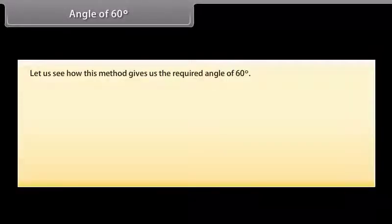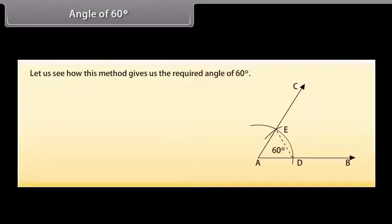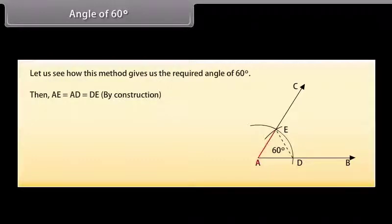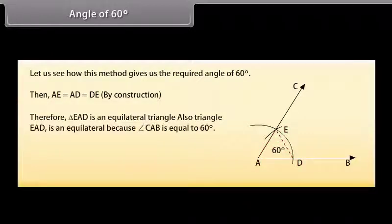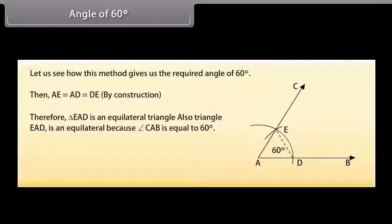Now let us see how this method gives us the required angle of 60 degrees. Join DE. Then by construction, AE is equal to AD which equals DE. Therefore, triangle EAD is an equilateral triangle, and angle CAB is equal to 60 degrees.